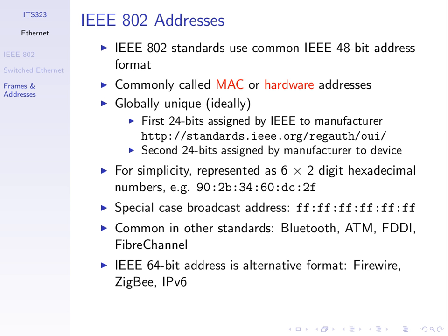For humans, writing down and remembering 48 bits is not easy, so the 48-bit addresses are converted into a hexadecimal format — six two-digit hexadecimal numbers. Here's an example of a 48-bit address written in hexadecimal. One hex digit is 4 bits, so there are 12 hexadecimal digits, or 48 bits total. The pairs of hexadecimal digits are separated by a colon or sometimes a dash in different formats.